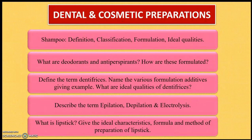The next chapter is dental and cosmetic preparations. The four most important and interesting points are: shampoo — you should know the definition, classification, formulation, and ideal qualities of shampoo. Then, what are deodorants and antiperspirants and how are these formulated? The next question is define the term dentifrices, name the various formulation types with examples, and what are the ideal qualities of dentifrices? Then, describe the terms epilation, depilation, and electrolysis. The next question is what is lipstick — give the ideal characteristics, formula, and method of preparation of lipstick.